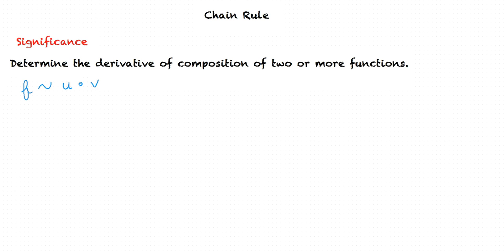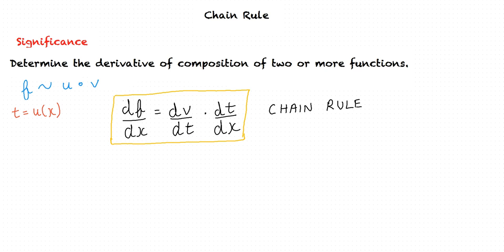Let f be a real-valued function which is a composition of two functions u and v. If t equals u of x, and both dt/dx and dv/dt exist, then according to the chain rule, df/dx equals dv/dt times dt/dx.